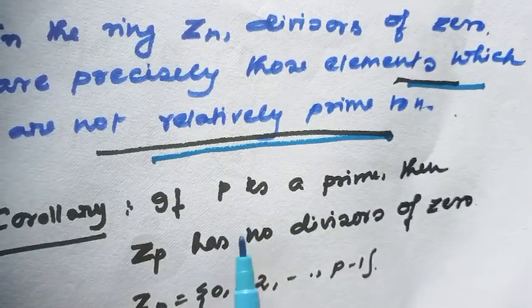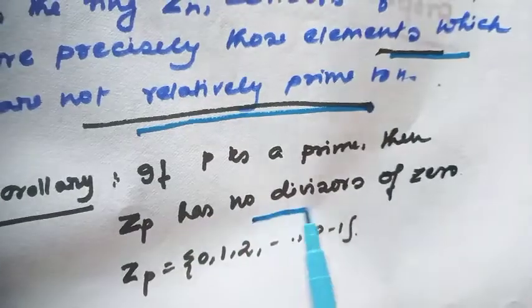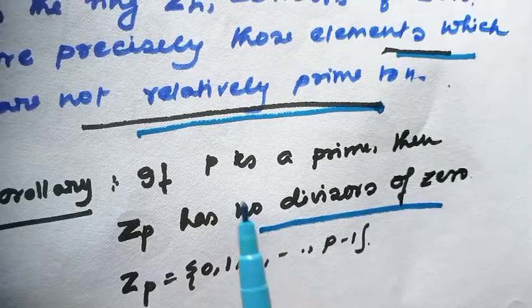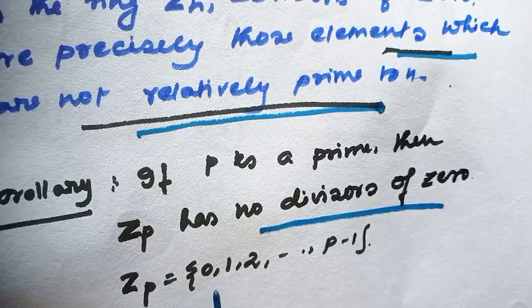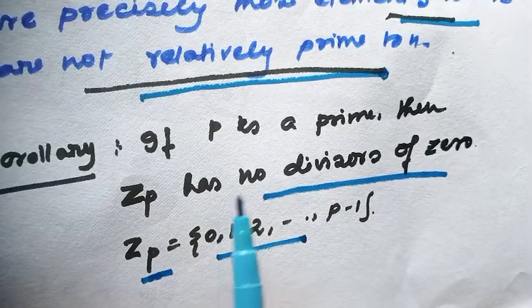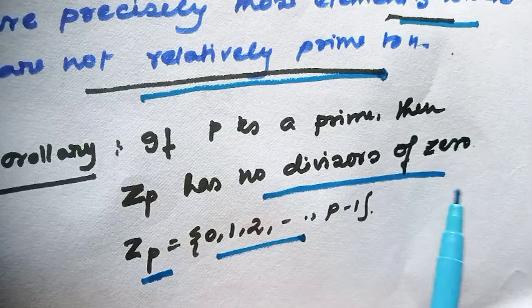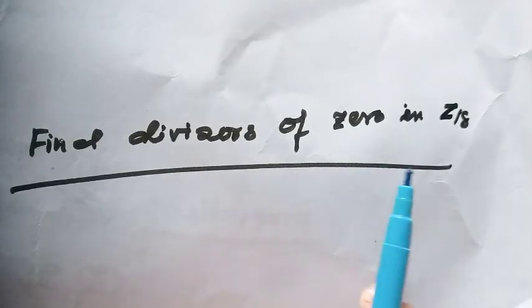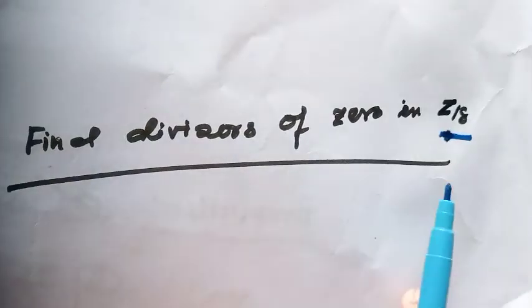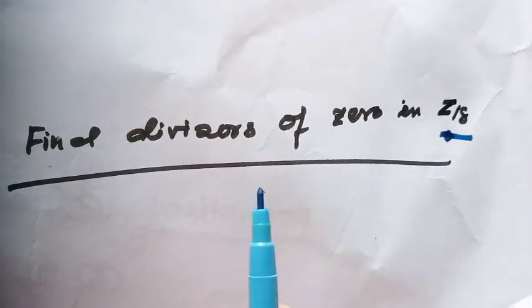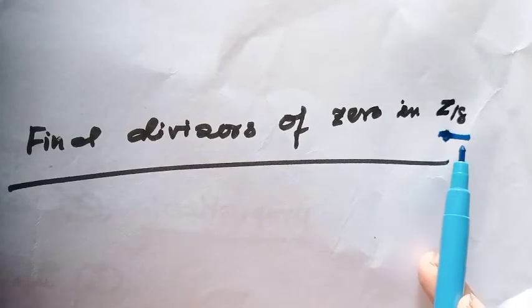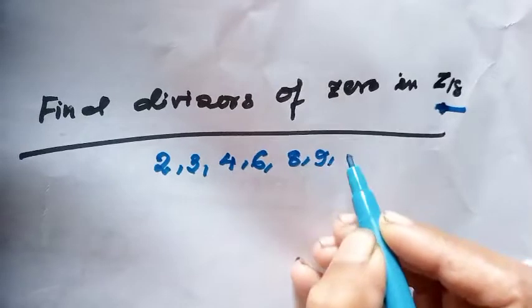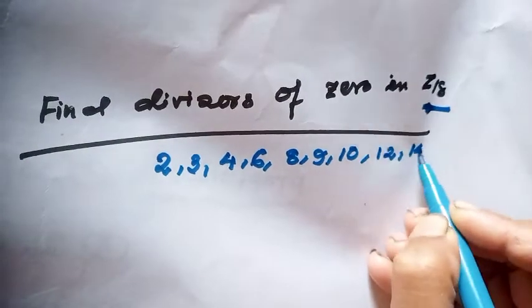As a corollary: if p is a prime number, then Zp has no divisors of zero, because Zp contains {0, 1, 2, ..., p−1} and since p is prime, every non-zero element of Zp is relatively prime to p. So if p is prime, Zp has no divisors of zero and all non-zero elements of Zp are units. For example, find the divisors of zero in the ring Z18: these are those elements of Z18 which are not relatively prime to 18, namely {2, 3, 4, 6, 8, 9, 10, 12, 14, 15, 16}.